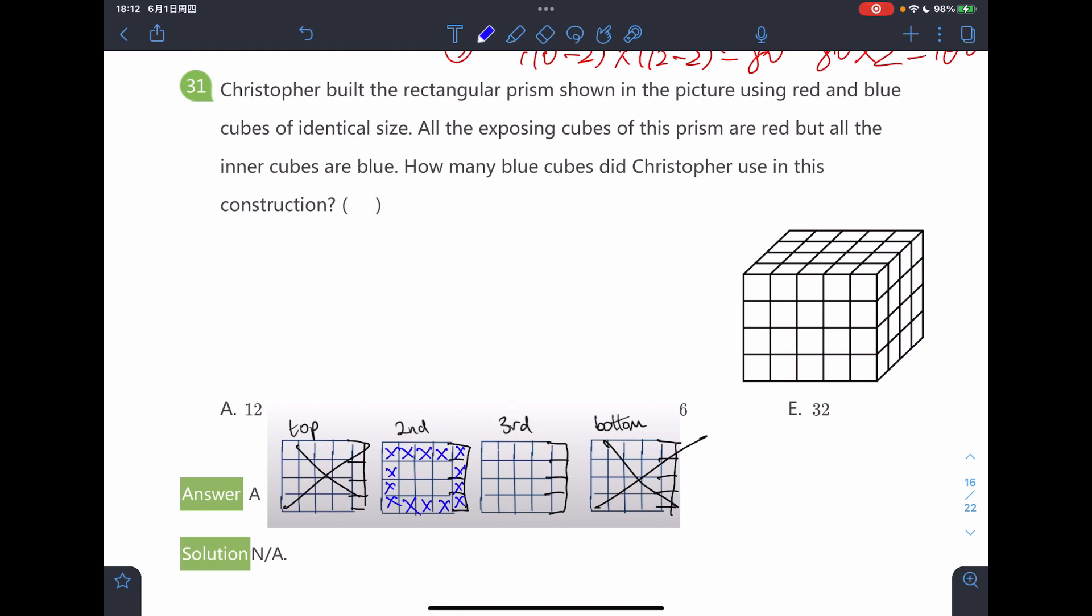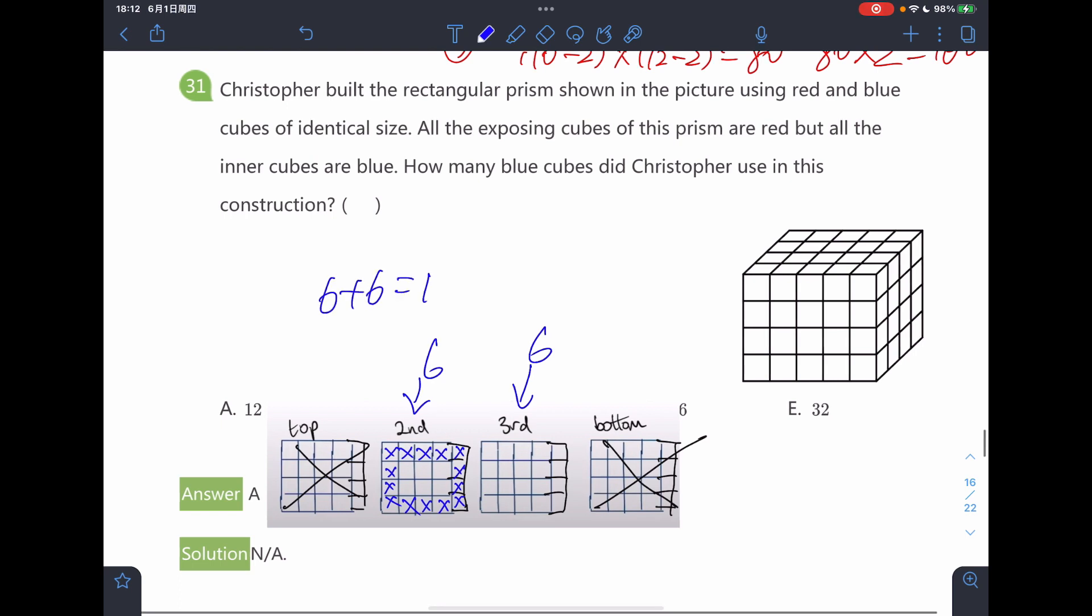We only have six for the second layer and the same way for the third layer. Therefore, in total, we have six adding six, which is 12 cubes that will be painted blue.